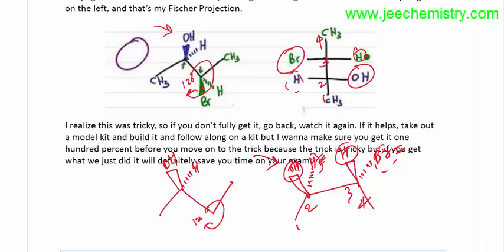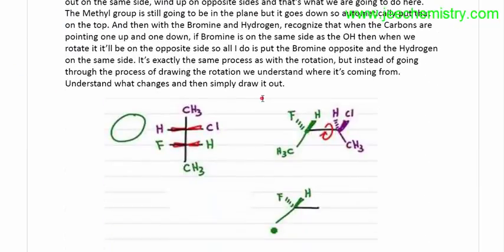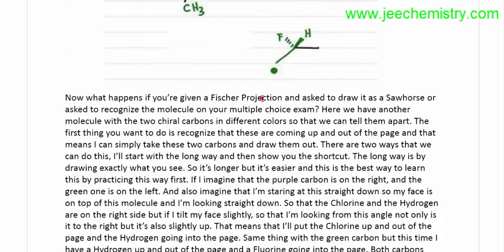If it didn't rotate, then directly you can put the opposite one on the left side — H will be on the right side, the wedge will be on the left side. In this way you can convert the Sawhorse projection formula into a Fisher's projection formula.